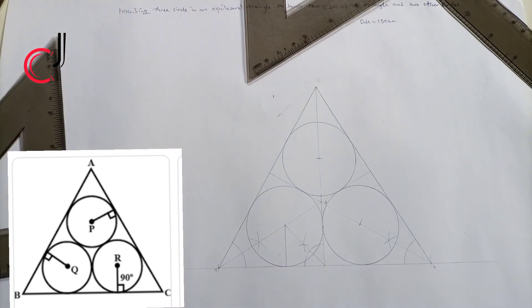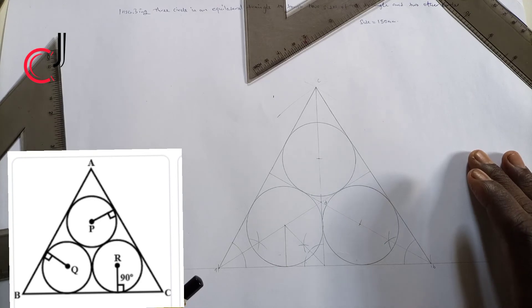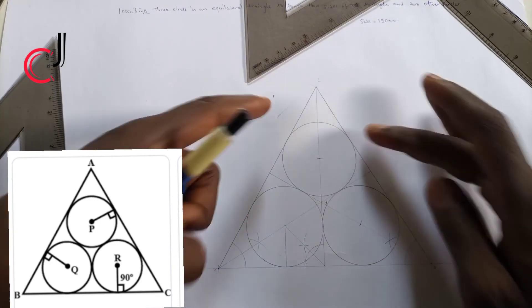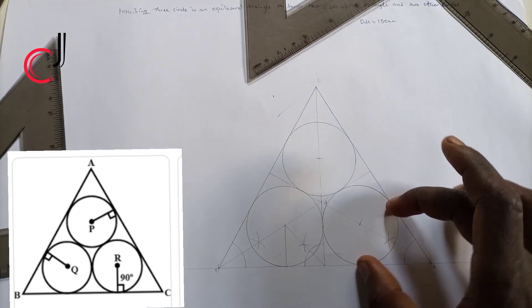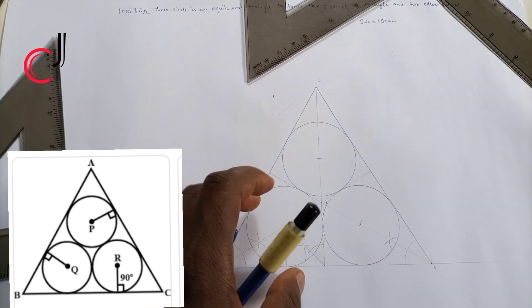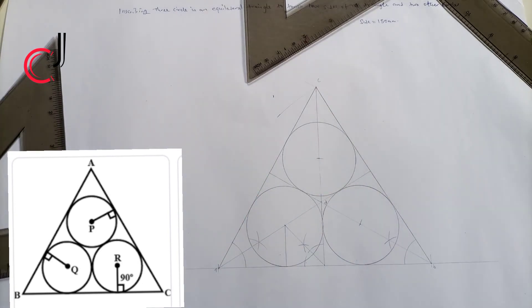You can see it over here. We are done inscribing three circles in an equilateral triangle to touch two sides of the triangle and two other circles - two sides of the triangle and two sides of the cycle.